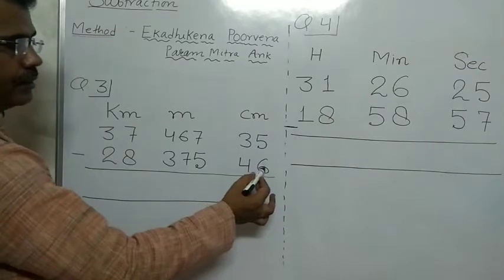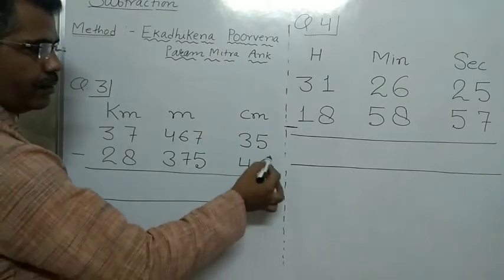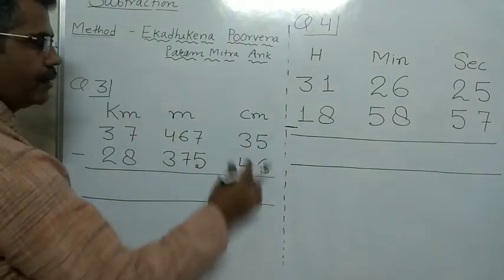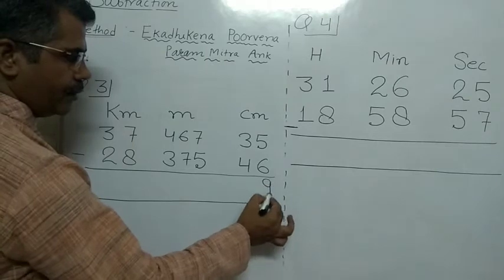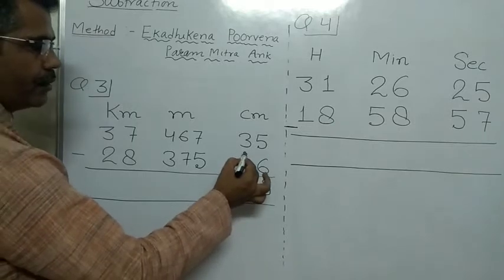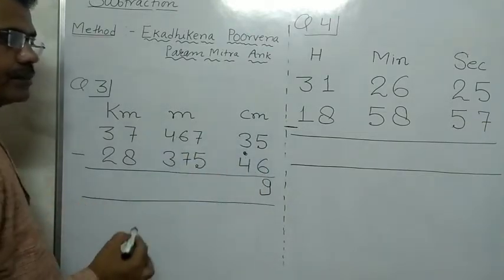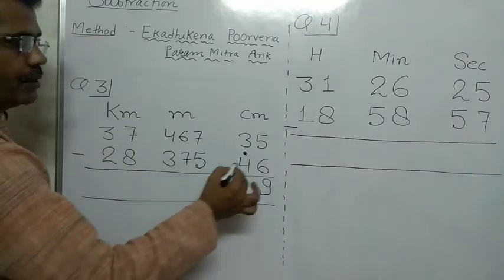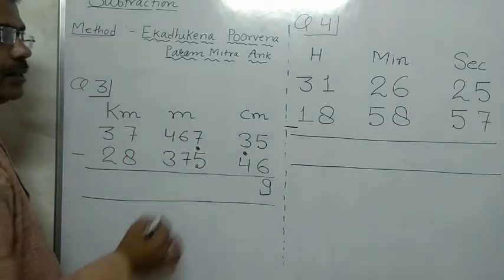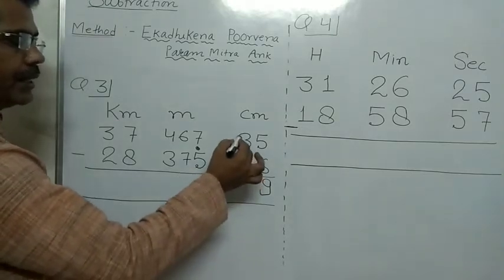Here 6 cannot be subtracted from 5, so we use this method. Pramikkar Ankh of 6 is 4. 4 added to upper digit gives 9. We use Ekatecane Purvend here. Again 5 cannot be subtracted from 3, so we use Ekatecane Purvend. Pramikkar Ankh of 5 is 5. 5 plus 3 is 8.